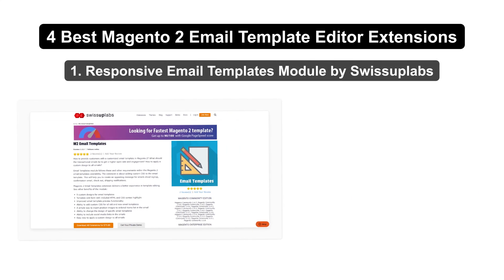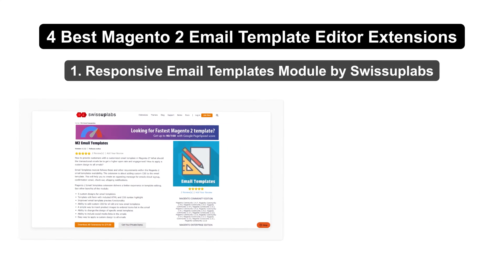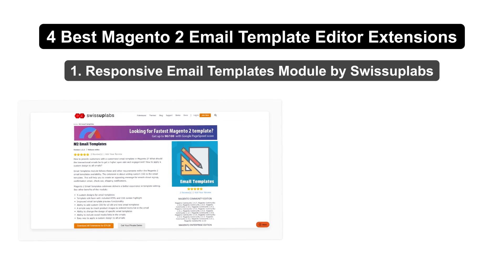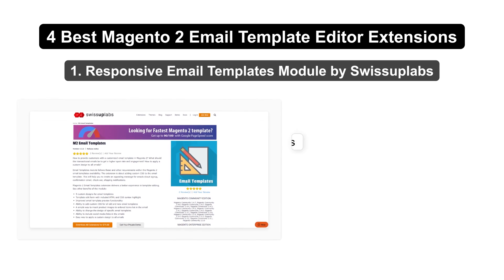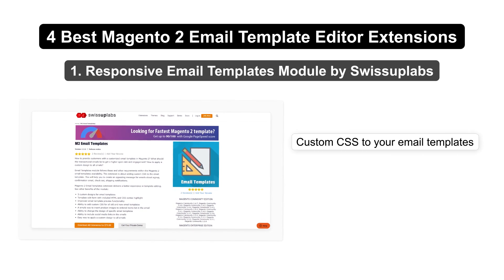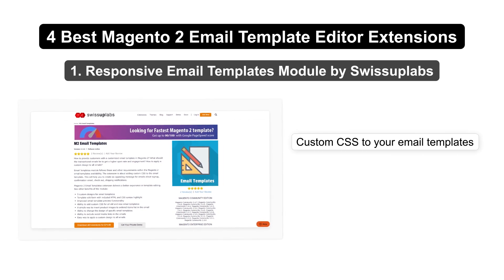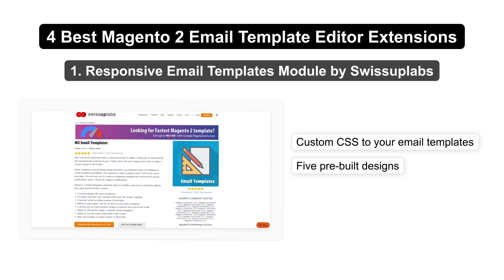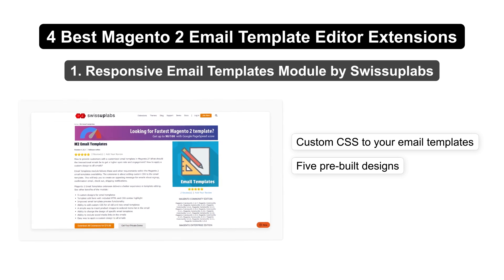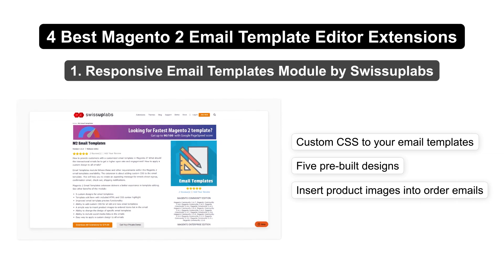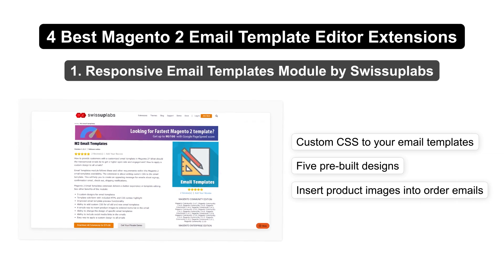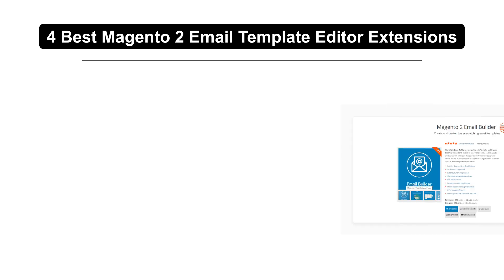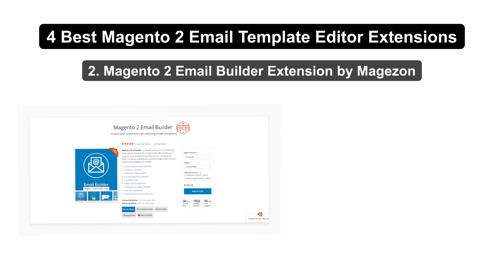First up is the Responsive Email Templates module by Swissup Labs. This module focuses on adding custom CSS to your email templates. It comes with five pre-built designs and allows you to insert product images into order emails.